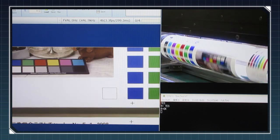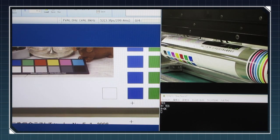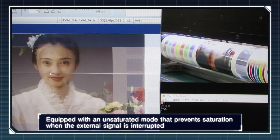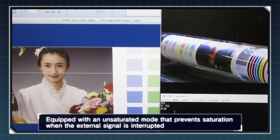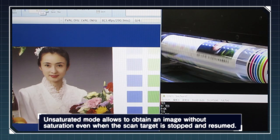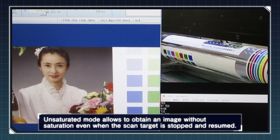This IDC series is the first in industry to be equipped with an unsaturated mode that prevents the saturated image when external sync is stopped. Unsaturated mode allows to obtain an image without saturation, even when the scan target is stopped and resumed.